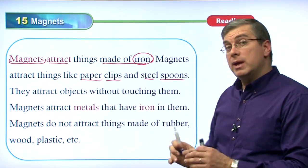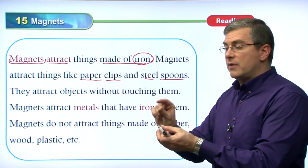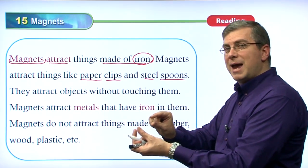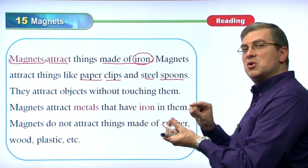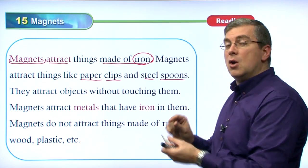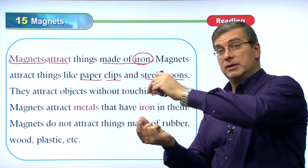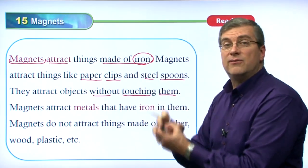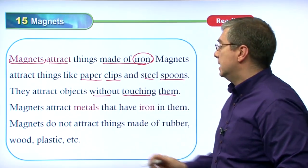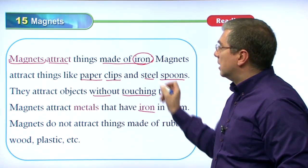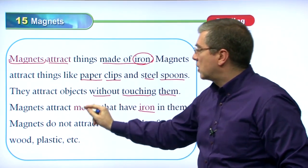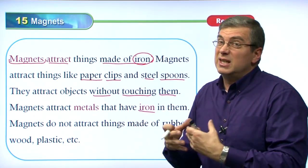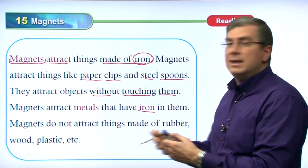They attract objects without touching them — without even touching them. For example, if you have a strong magnet and a spoon and put them near each other, without touching, the spoon will come towards the magnet. Or you could put the magnet under a piece of paper with the spoon on top — they're not touching, but you can drag that spoon around. Without touching them, there is a force of attraction. Magnets attract metals that have iron in them — not just made of iron, but if the metal has iron in it, like steel, it will attract it as well.